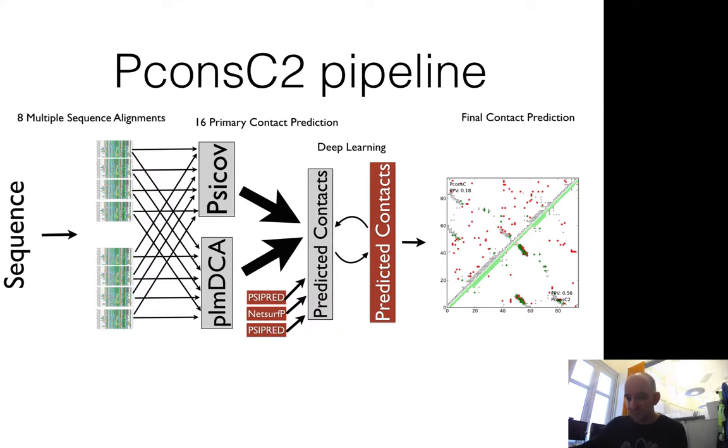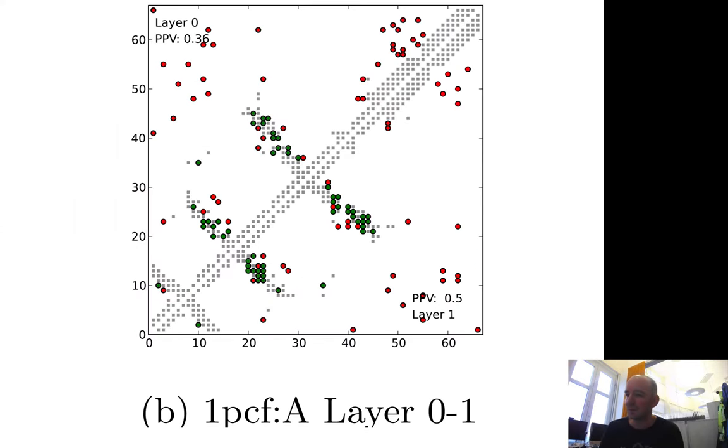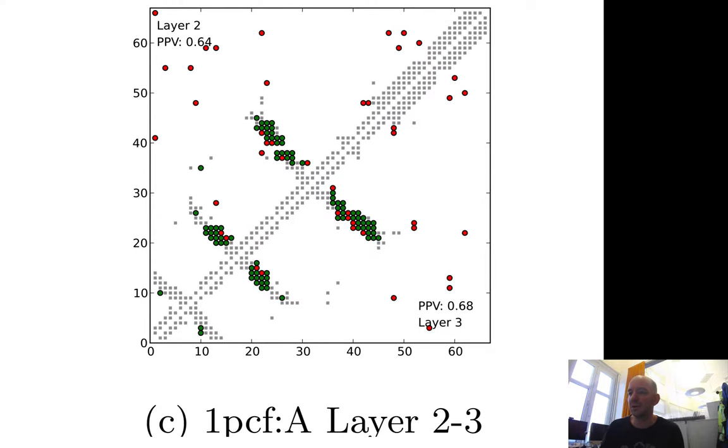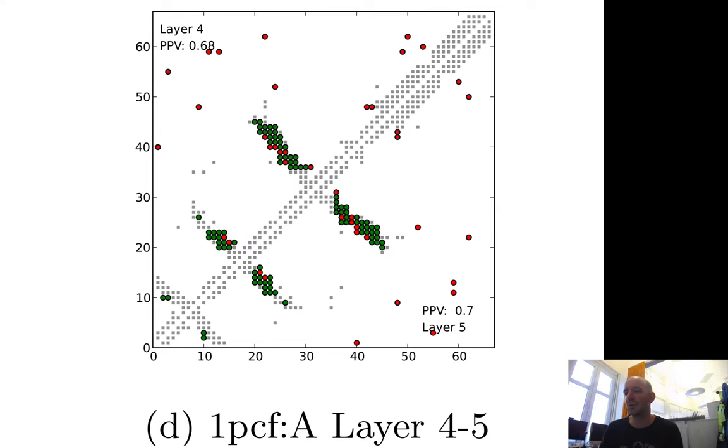We use this to develop the PconsC2 pipeline, which uses a combination of eight alignments, two different contact prediction methods, and other information. We particularly use deep learning predicted contact maps to iteratively improve the alignment, using the information that contacts like to be close to other contacts, particularly in diagonals. Starting at layer one, you see a moderate prediction. At layer two, you get more correct contacts in these diagonals, then at three even more, and at four and five you get more, ending up with 70% correct contacts.